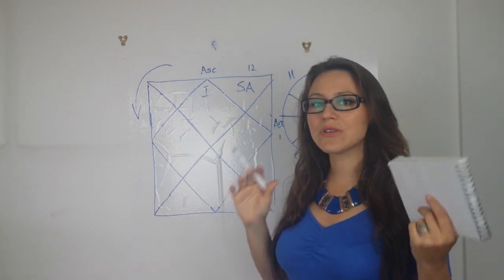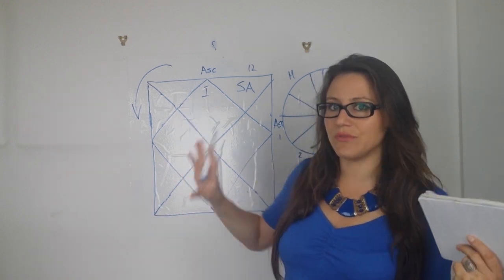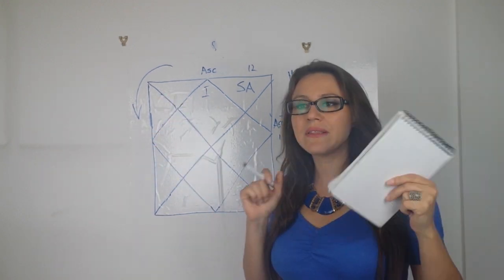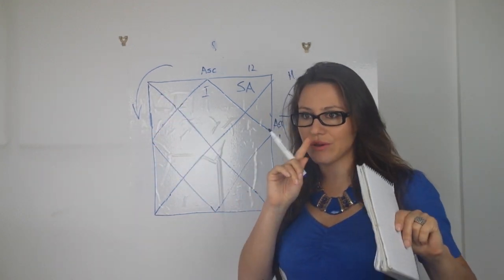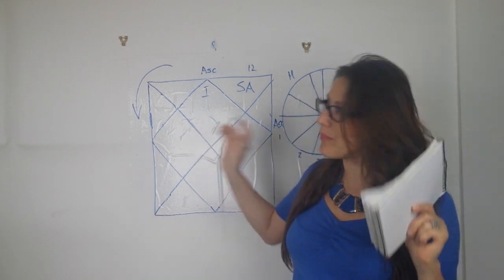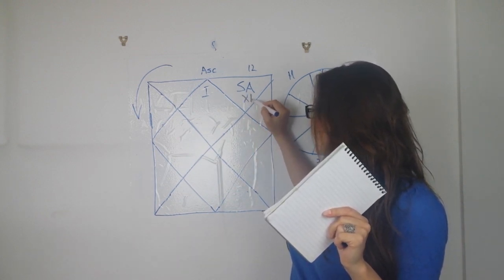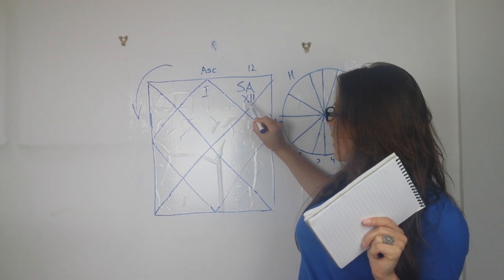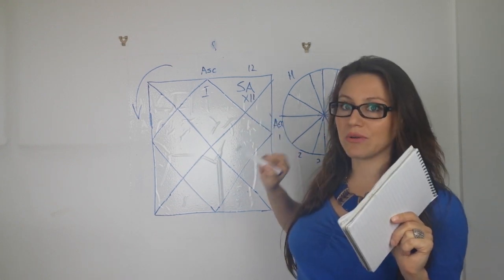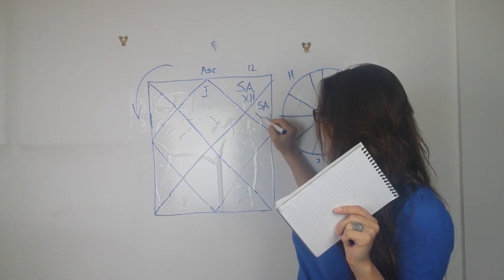The house cusps are different ways of dividing the horoscope which are very similar to the sign division but they're a bit more geometrically correct. Both systems work, so check both of them. I want you to see if Saturn is in the same square or triangle as the 12th Roman numeral.